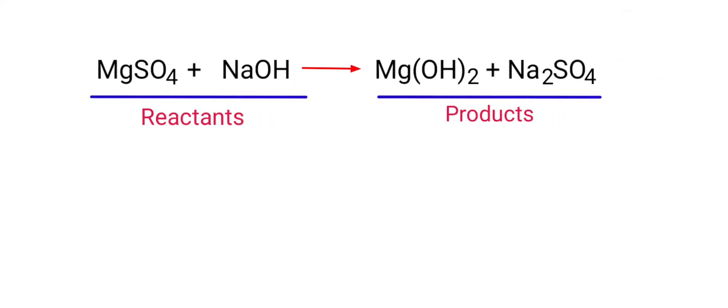In this equation, the reactants are Magnesium Sulphate and Sodium Hydroxide and the products are Magnesium Hydroxide and Sodium Sulphate. If you look at this equation, the equation is not balanced.